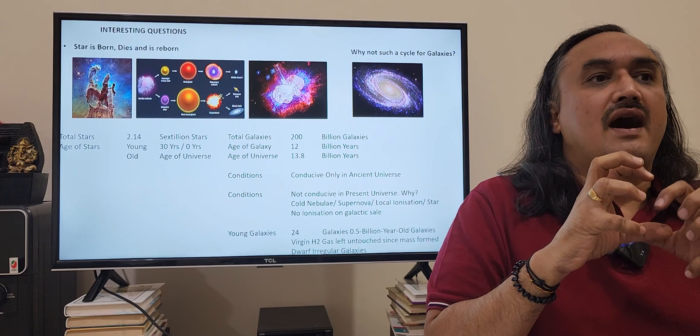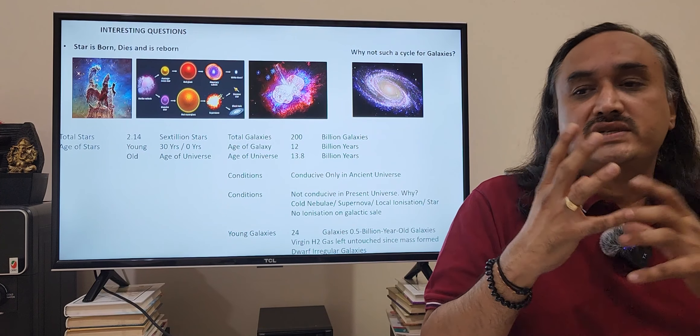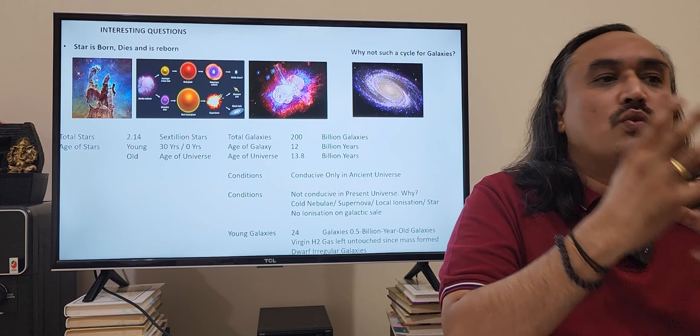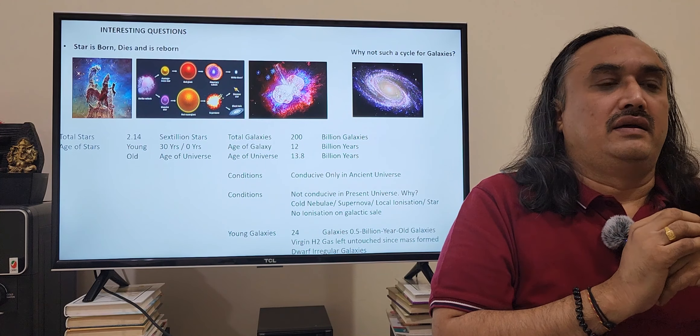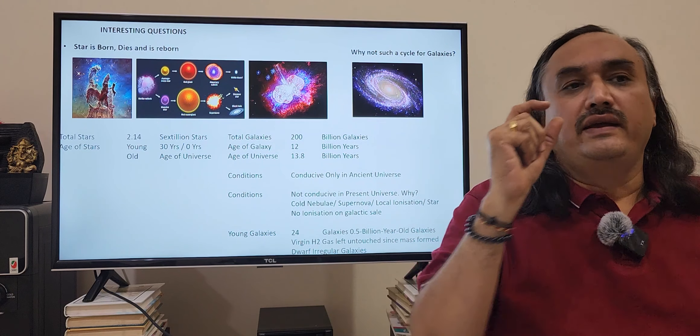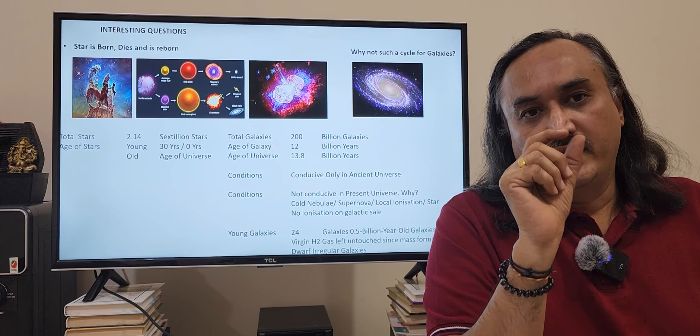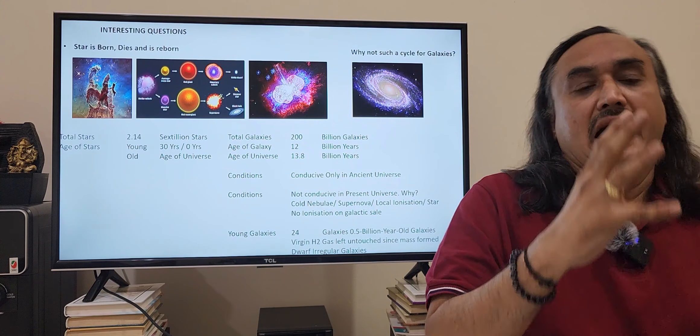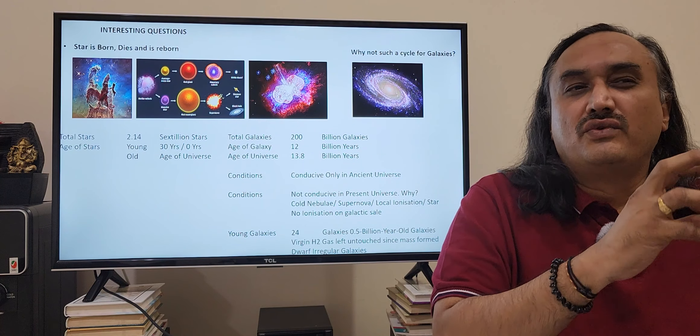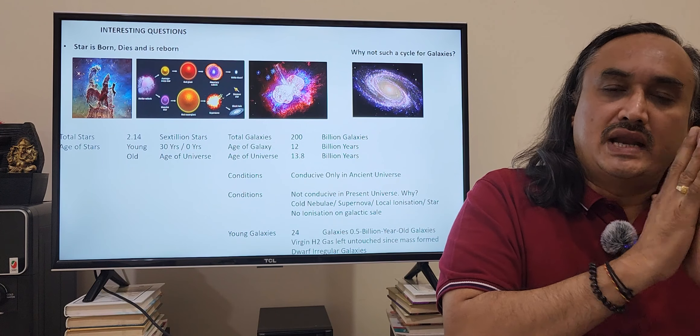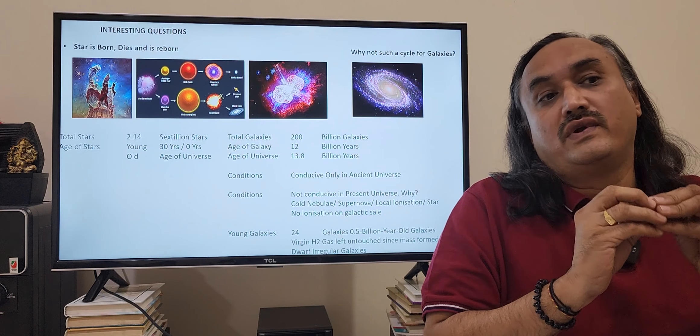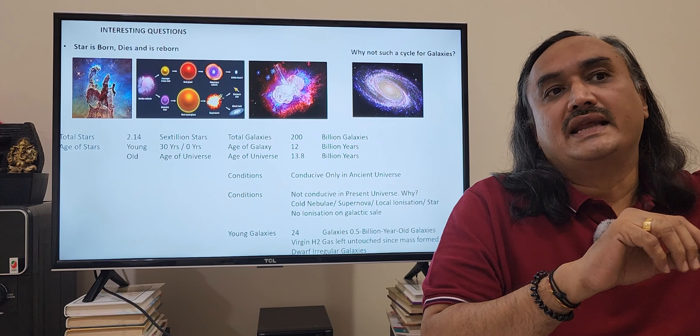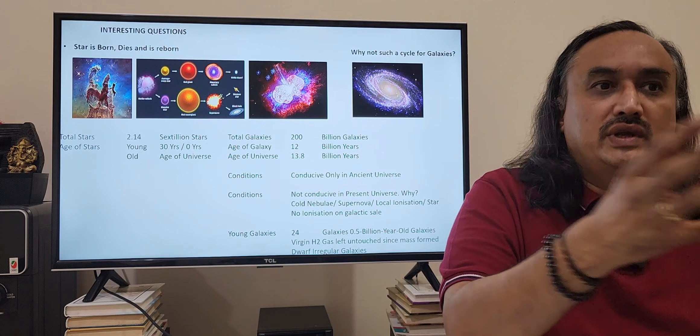These young galaxies formed from virgin hydrogen gas. Generally, whatever gas was there in the early universe got formed into galaxies. But since the universe was expanding, if at all a pocket of hydrogen gas got missed from the formation of galaxies in the early universe, that gas would remain as virgin gas. Those are the kind of pockets, very few of them. As I said, 99.9999% is all old galaxies. Just 24 of them are formed because of those virgin hydrogen gas pockets which got missed in the early universe.